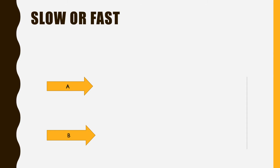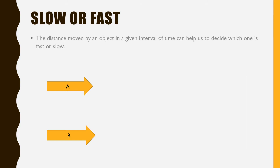Slow or fast — how will you know which vehicle moving on a road is moving slow and which is moving fast? For example, in a running race at school, your friends are running. How will you know which friend is moving slow or fast? You can know by looking at the distance covered by each of them in a given interval of time. Two arrows, A and B, are given — let's see which one is slow and which is fast.